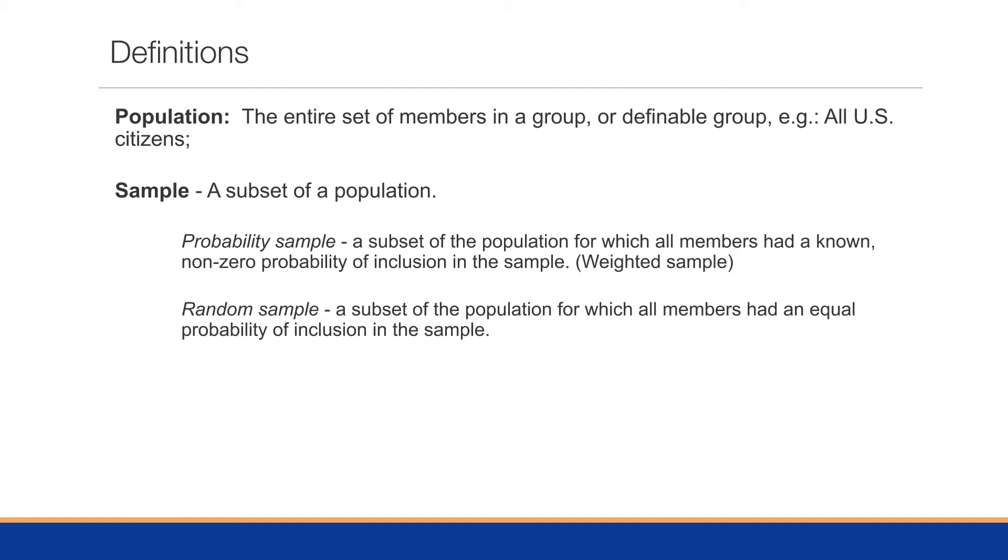We might do something like this by saying we know that we need 50% male and 50% female, or we would need 80% of one demographic group, 20% of another demographic group. This would be a weighted sample.